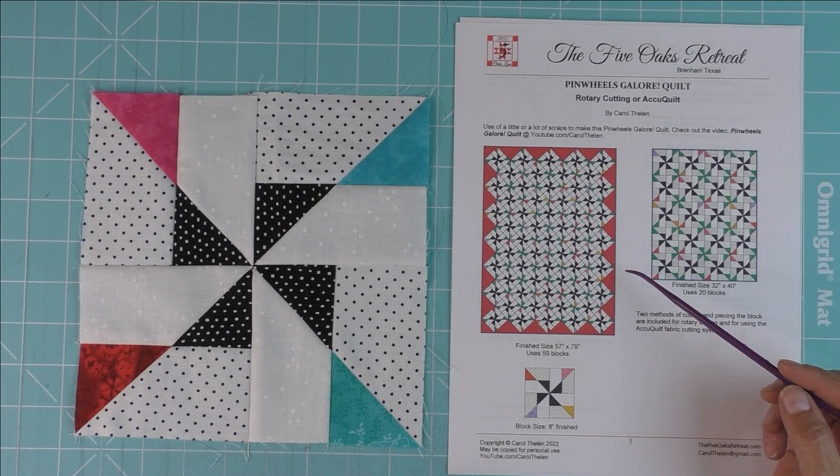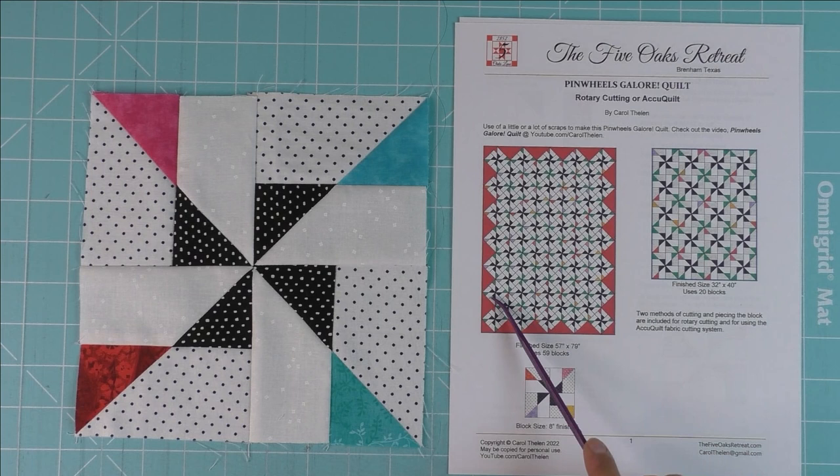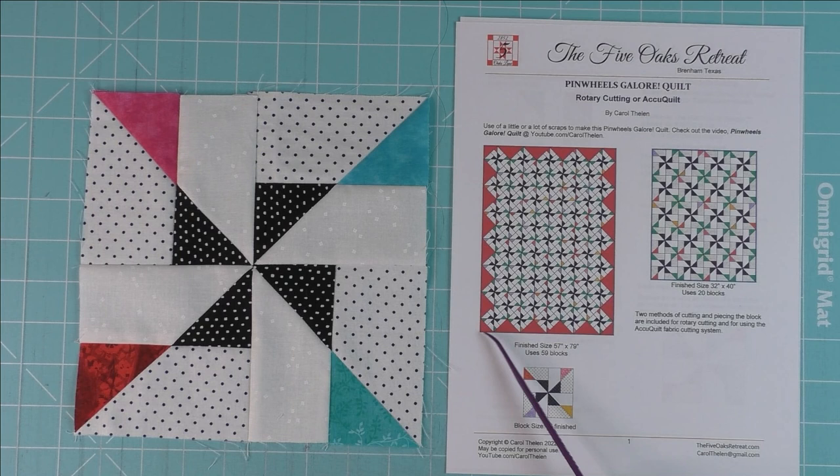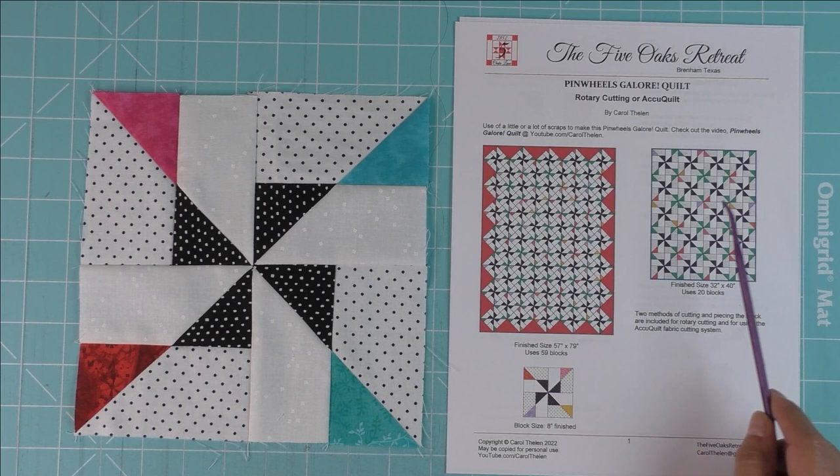I'm not giving any yardage because the idea is to use up your scraps, but I do give you two different quilt layouts. This is the one that's on the diagonal, and I tell you how much fabric you need for the setting triangles and how to cut those.